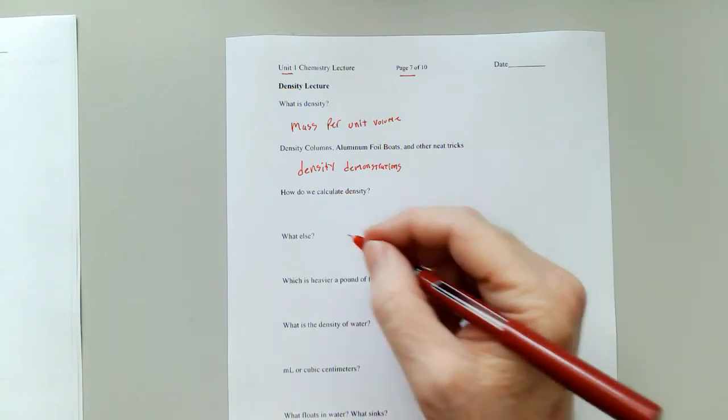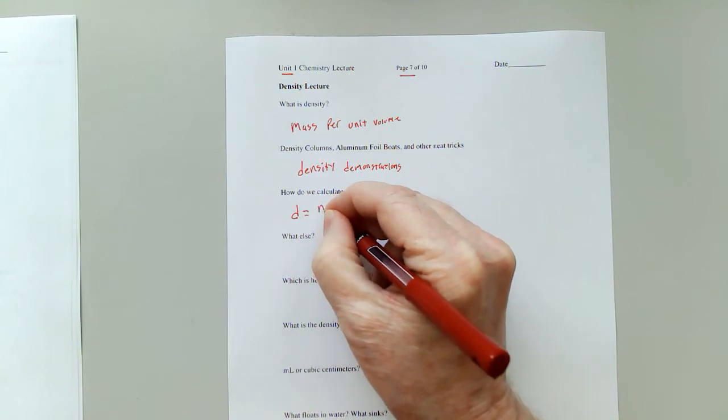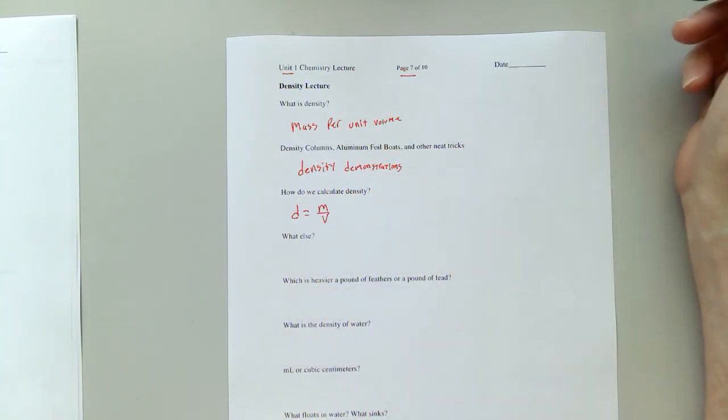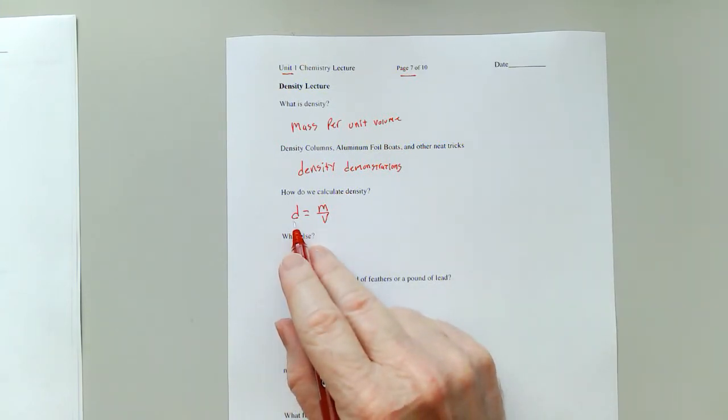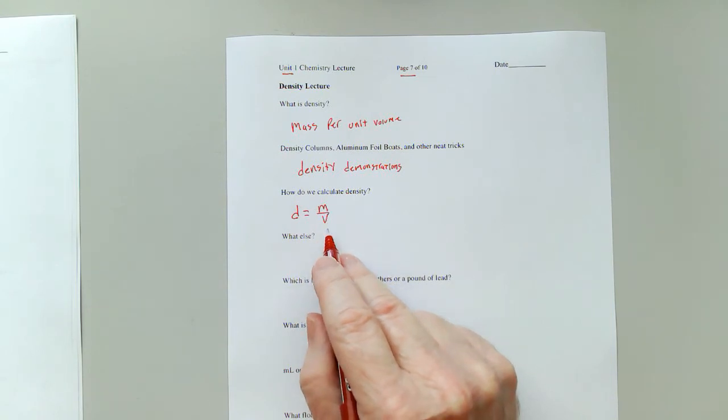So how do we calculate density? The formula is density equals mass divided by volume. And just because I like to be a little picky about these things, it is a lowercase d, it is a lowercase m, and it is a capital V.